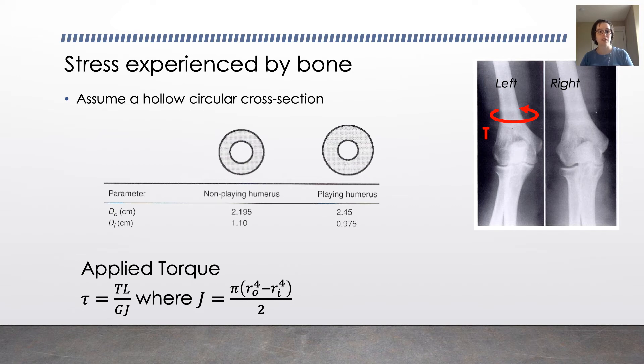And a bigger j, because it's on the bottom, because the shear stress is inversely dependent, results in a smaller shear stress. A bigger j results in a smaller shear stress.